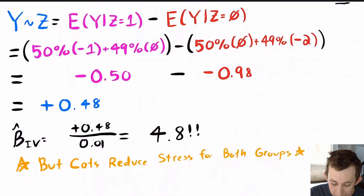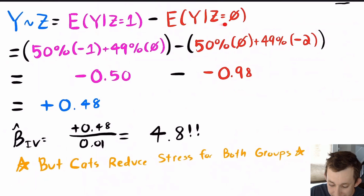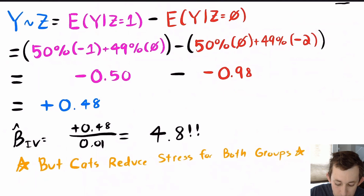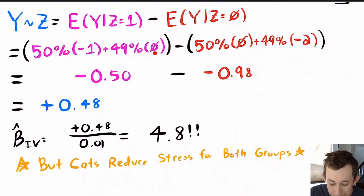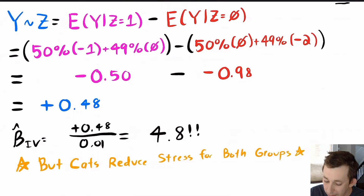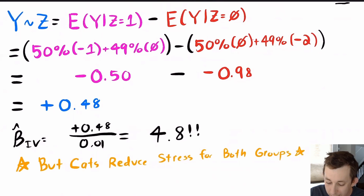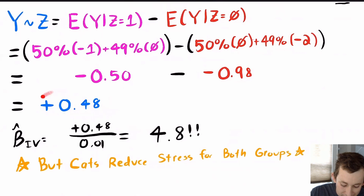Similarly, the effect of Z on Y is the average Y given Z=1 minus average Y given Z=0. When Z=1, 50% are compliers with a treatment effect of −1; 49% are defiers who don't take treatment when instrumented, so no effect. When Z=0, compliers don't take treatment; but 49% of defiers do (X=1 when Z=0), giving a treatment effect of −2. The difference comes out to a positive 0.98, wait — taking the difference yields +0.49, and dividing by 0.01 gives approximately +4.8.